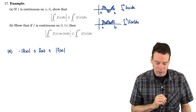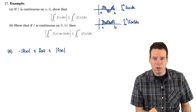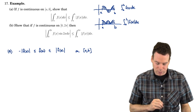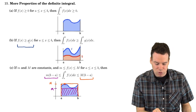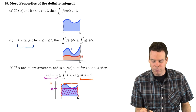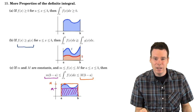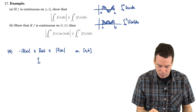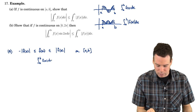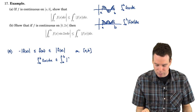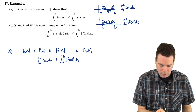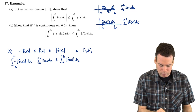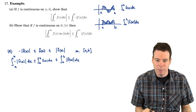Now at this stage we've got three functions with inequalities between them, and these hold on the entire interval a to b. That previous property said that if f is bigger than g on the interval, then the integral of f is bigger than the integral of g — the integrals preserve the inequality. So we can integrate through everything: the integral from a to b of f(x) dx is less than or equal to the integral from a to b of |f(x)| dx, and greater than or equal to the integral from a to b of negative |f(x)| dx.